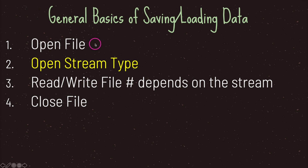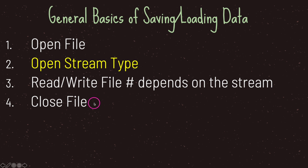The first step is you need to open a file. The second step is that you need to open up a file stream, and file streams generally come in different types. After you've opened up the file and the file stream, you are going to read and/or write to your file — what you are able to do is dependent on the type of file stream you have open. Then once you are done you are going to close your file. Again, these are four basic steps no matter the programming language.